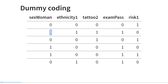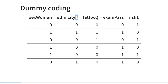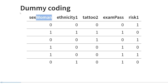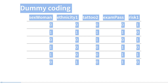Here we see the same five variables recoded so that the only values are zero and one. The variable sex has been recoded to 'sex woman,' where zero indicates not a woman and one indicates a woman. Similarly for ethnicity, tattoo, exam pass, and risk. Representing two groups as zeros and ones — where zero indicates the person is not a member of the group being coded for and one indicates they are — is called dummy coding. It is the core technique for representing binary variables in the general linear model.